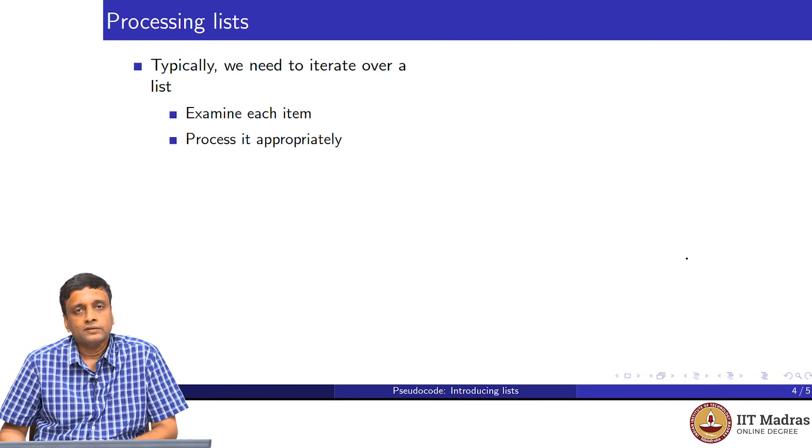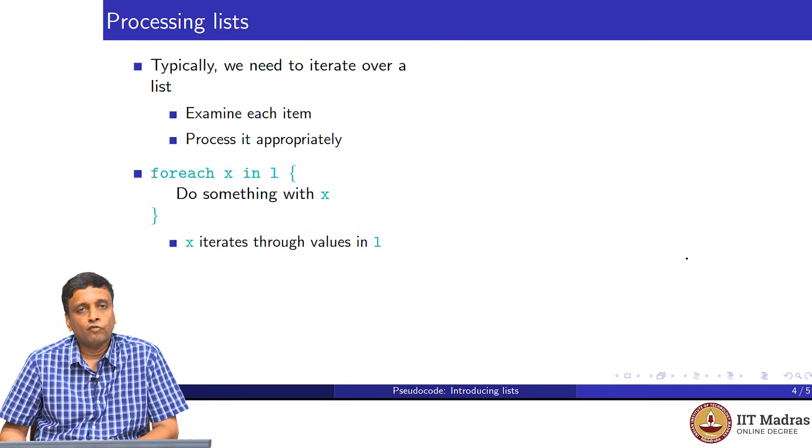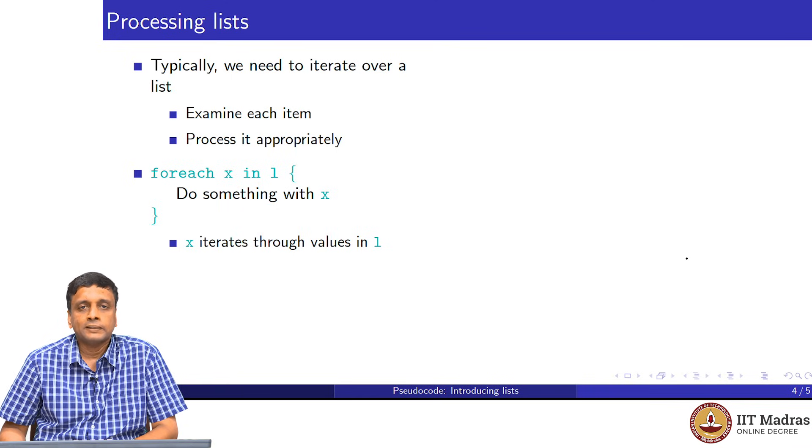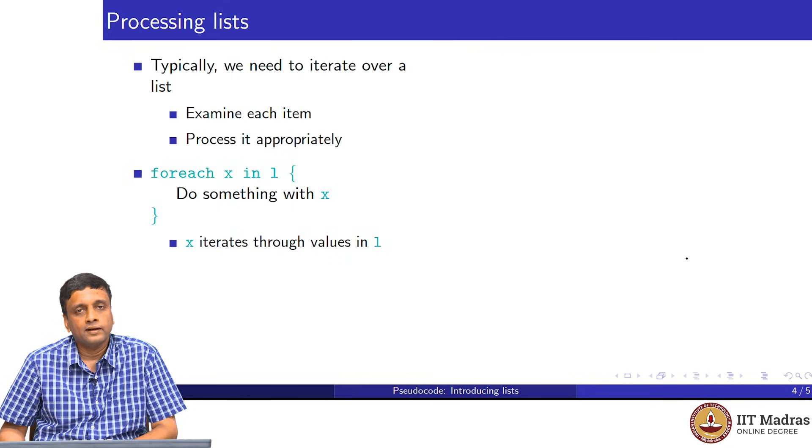Having got a list, what do we do with it? Most often, we need to go through the items in the list and process them in some way. We need to go through them systematically from beginning to end, look at each item, and decide what to do with it. This kind of list iteration requires a primitive. We are going to create one called foreach. Foreach is a special kind of primitive which allows us to iterate over a list. When we say foreach x in L, it means that x will initially take the first value in L, then it will take the second value in L, then it will take the third value in L.